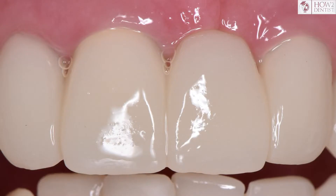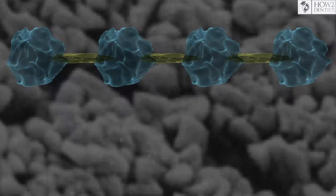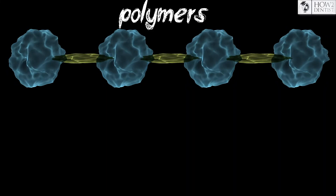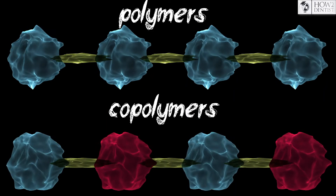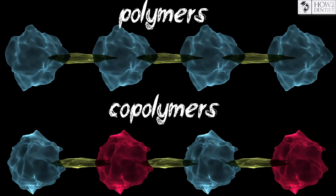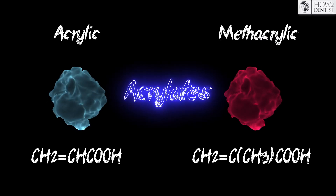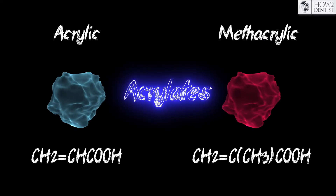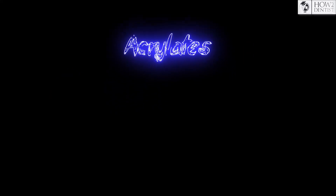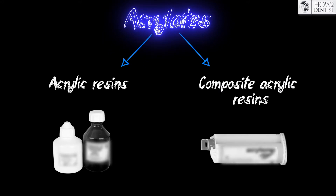As a rule, resin is used as a material for a temporary crown, the base of which is polymers or co-polymers. Commonly used polymers of acrylic and methacrylic acid are called acrylates. They form a rather extensive class of acrylic resins, which were conditionally divided into two groups: acrylic resins and composite acrylic resins.